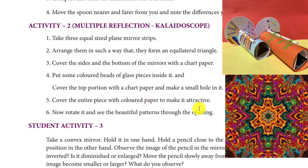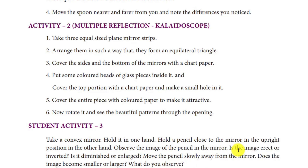Take a convex mirror and hold a pencil close to it in the upright position. Observe the image of the pencil in the mirror — is the image erect or inverted? A convex mirror always forms virtual images, that means erect and diminished images. From this you can understand the nature of the image formed in a convex mirror.